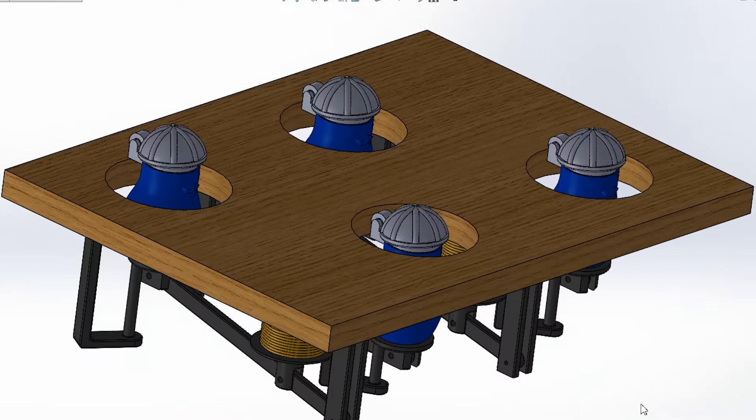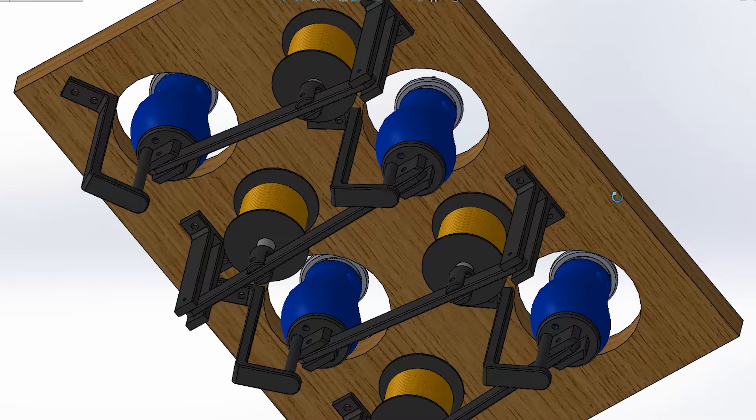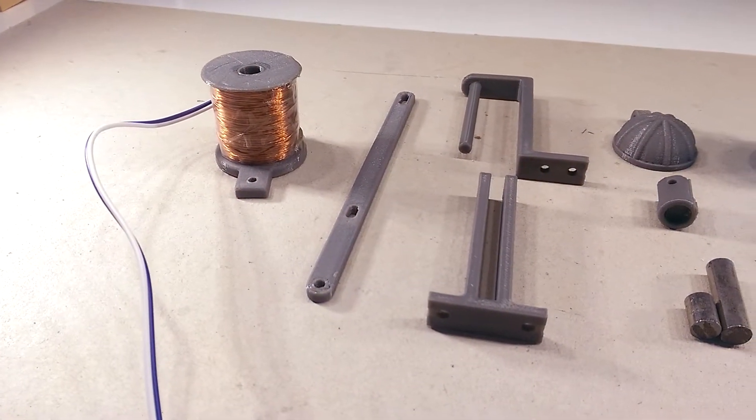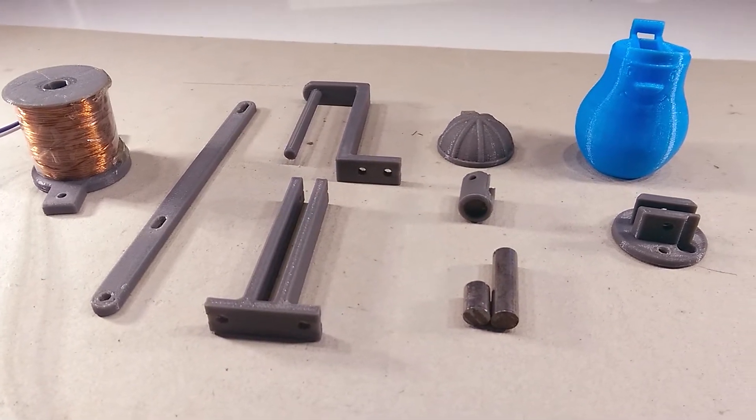The rest of the mechanism will be 3D printed and then mounted onto a 14mm thick plywood. Usually for repetitive parts like this, I like to print out one set first and then assemble that to make sure all the parts work together as intended.